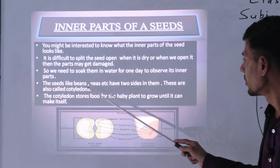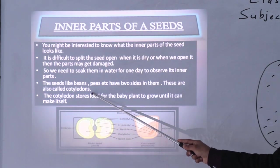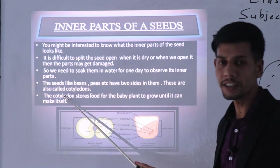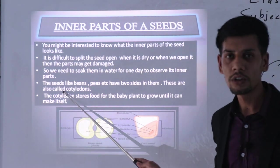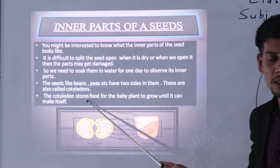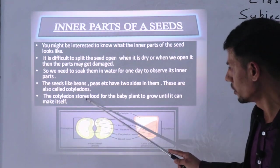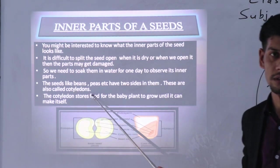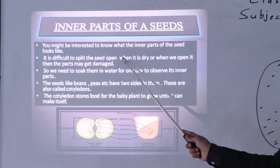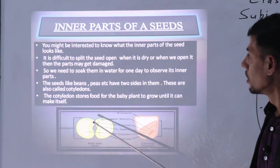So the cotyledon stores food for the baby plant to grow until it can make itself. Now what does the cotyledon do inside the seed? What is its work? You may have some confusion about this. Its work is to store the food. The embryo is inside the seed, and from the seed a baby plant comes. First the embryo comes, and after that the baby plant comes. The food needed for this baby plant is provided by the cotyledon. This way you can understand the inner parts of a seed very well. You can also do this experiment at home. You can do this experiment at home and observe the inner parts of the seed.